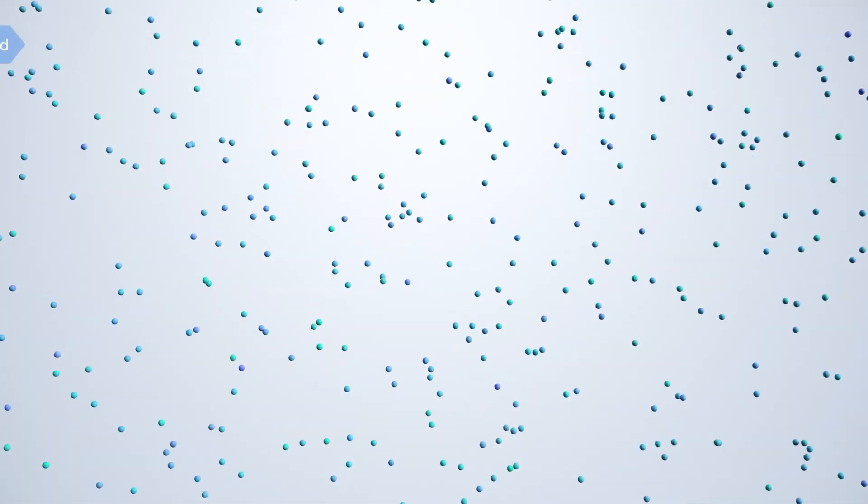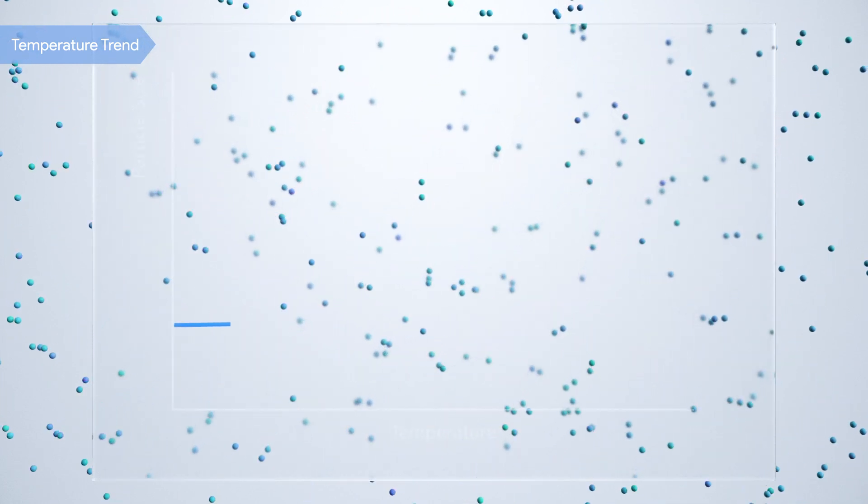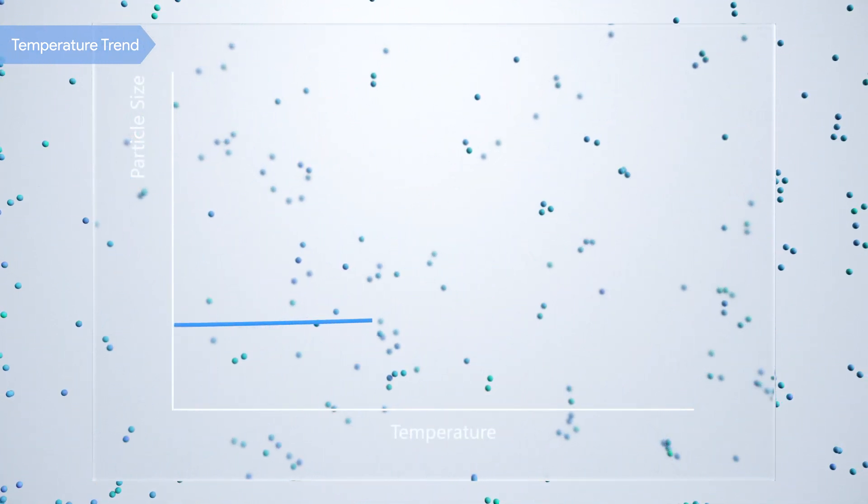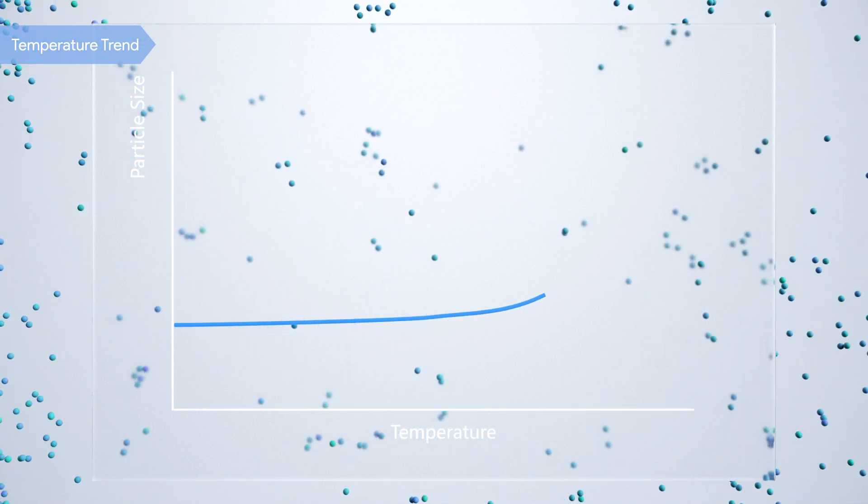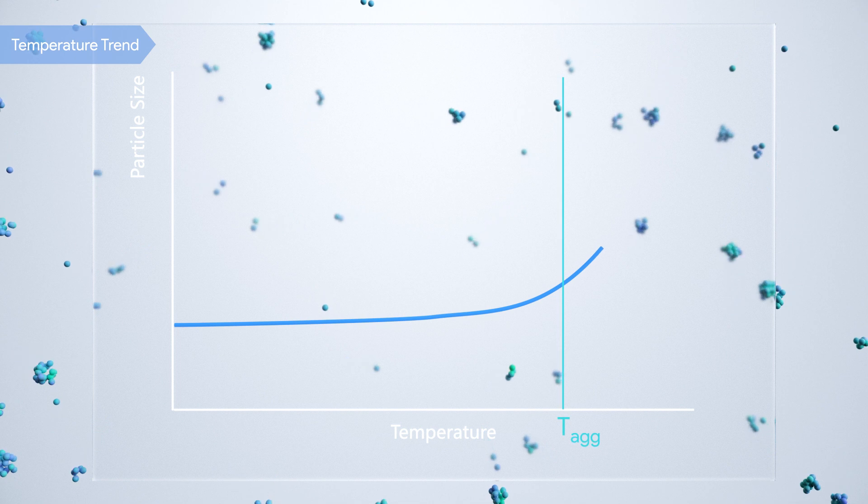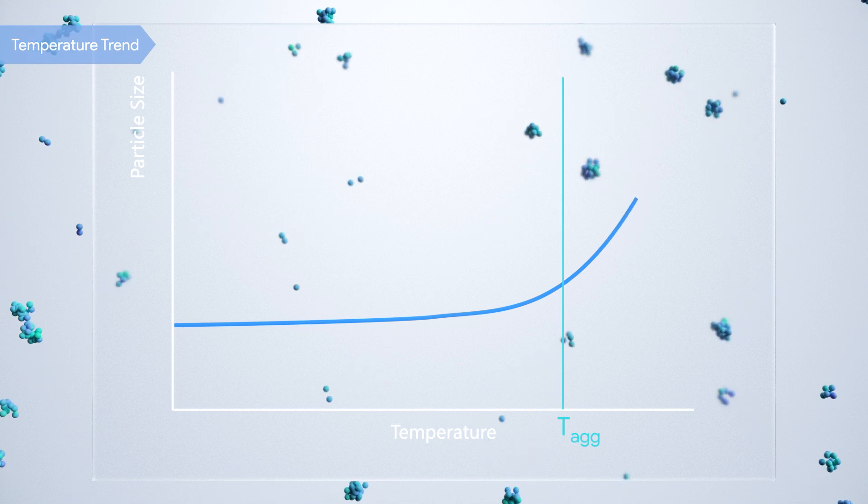For thermal sensitive samples, a temperature trend can be performed easily with a programmed SAP. The B-Nano software can also detect the temperature transition point of the size results, which is the aggregation temperature for protein samples.